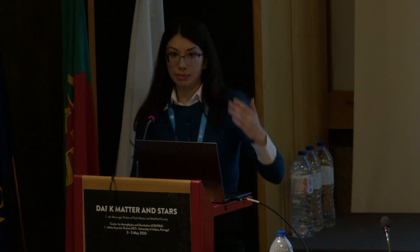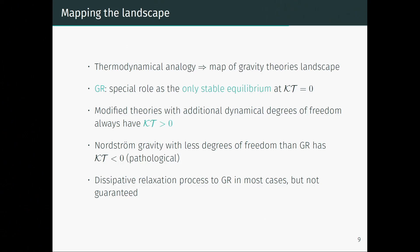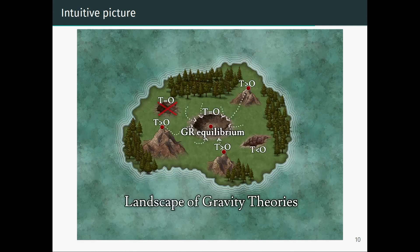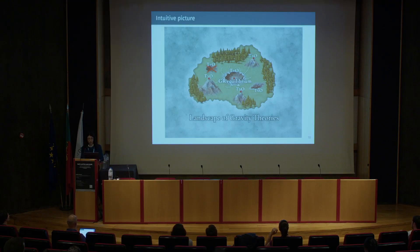This thermodynamical analogy allows us to understand GR's special role as the only stable equilibrium state at KT equals zero. Whenever we have an additional degree of freedom — scalar so far, but we've also tried to explore vector and others — we would have a KT greater than zero. There are also some pathological cases we studied: Nordström gravity, for example, is a pathological theory that has only the scalar field without the tensor field, so it has fewer degrees of freedom than GR. In our formalism, this gives KT less than zero, which of course doesn't make sense — it's just a proof of principle. This way we can understand this landscape of gravity theories with GR occupying a very central role, and no other equilibrium states at T equal to zero.